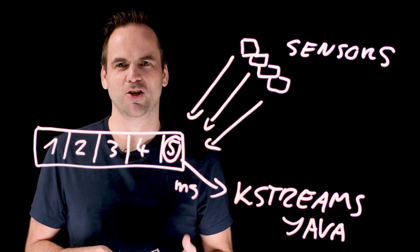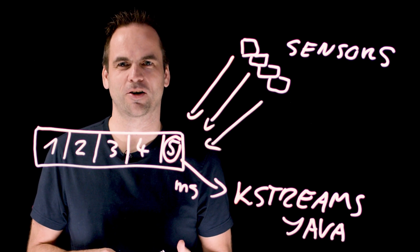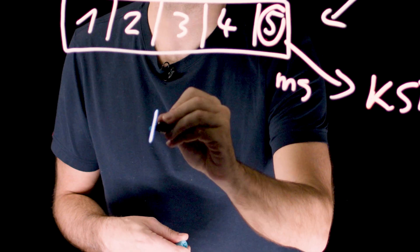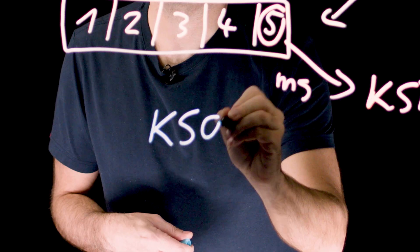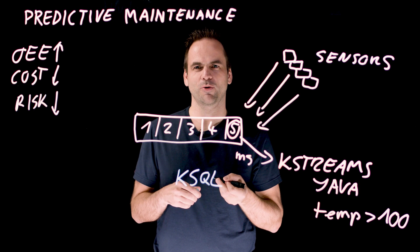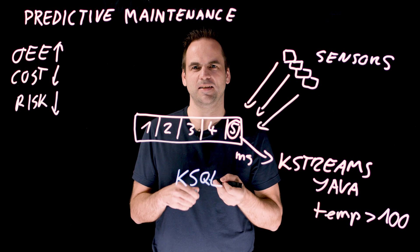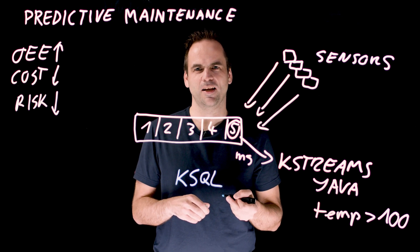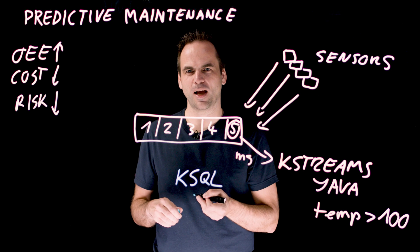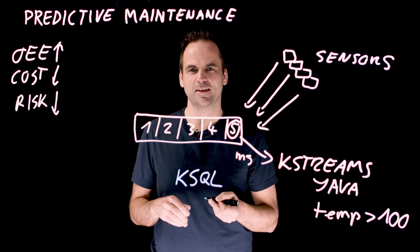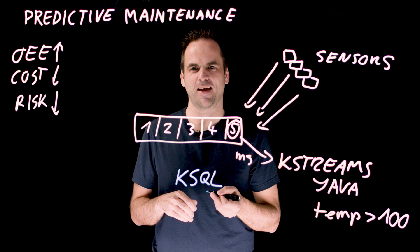However, we can build much more powerful scenarios with stream processing. In the second example, I want to use KSQL for that. The benefit here is that we have a high abstraction level — you can write just SQL code instead of low-level Java code. The business case is that we now build stateful applications that continuously aggregate information from different events.